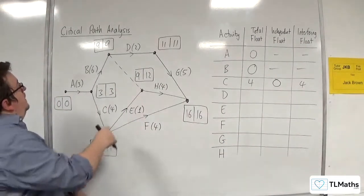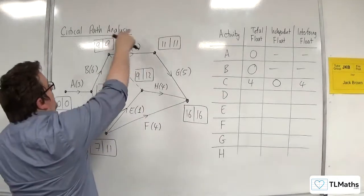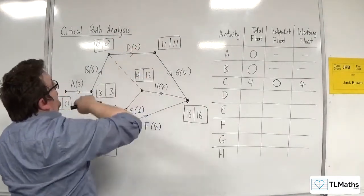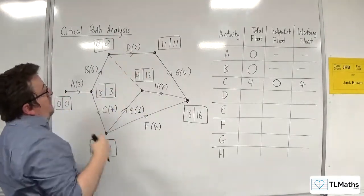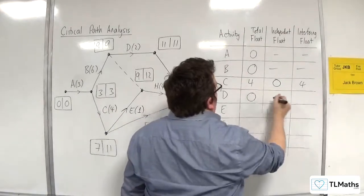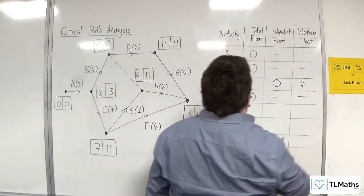How about D? We've got 9, 9 and 11, 11, and the duration is 2. So D is critical. Total float is 0, dash, dash.